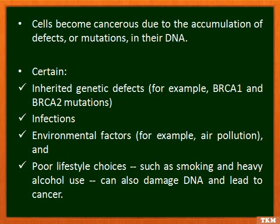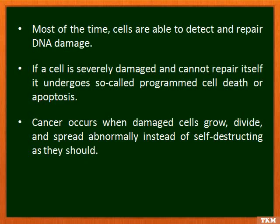Most of the time, cells are able to detect and repair DNA damage. If a cell is severely damaged and cannot repair itself, it undergoes programmed cell death, also called apoptosis. Cancer occurs when damaged cells grow, divide, and spread abnormally instead of self-destructing as they should.